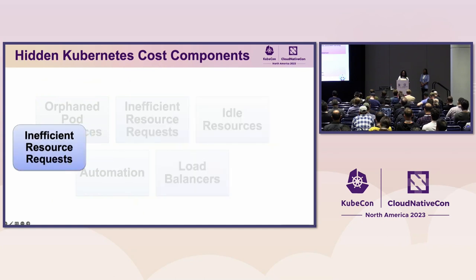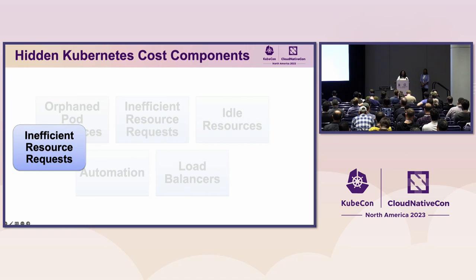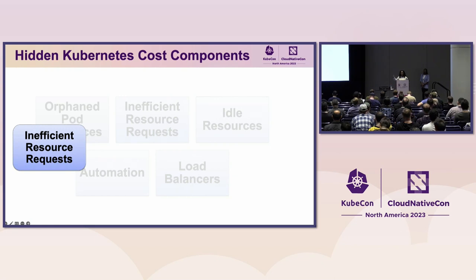Next, let's look at inefficient resources — specifically oversized and undersized pods. When pods are oversized, they tend to allocate more CPU than they actually need. Remember that with managed Kubernetes, you're charged based on the resources allocated to your pods, so oversized pods directly lead to increased infrastructure costs.